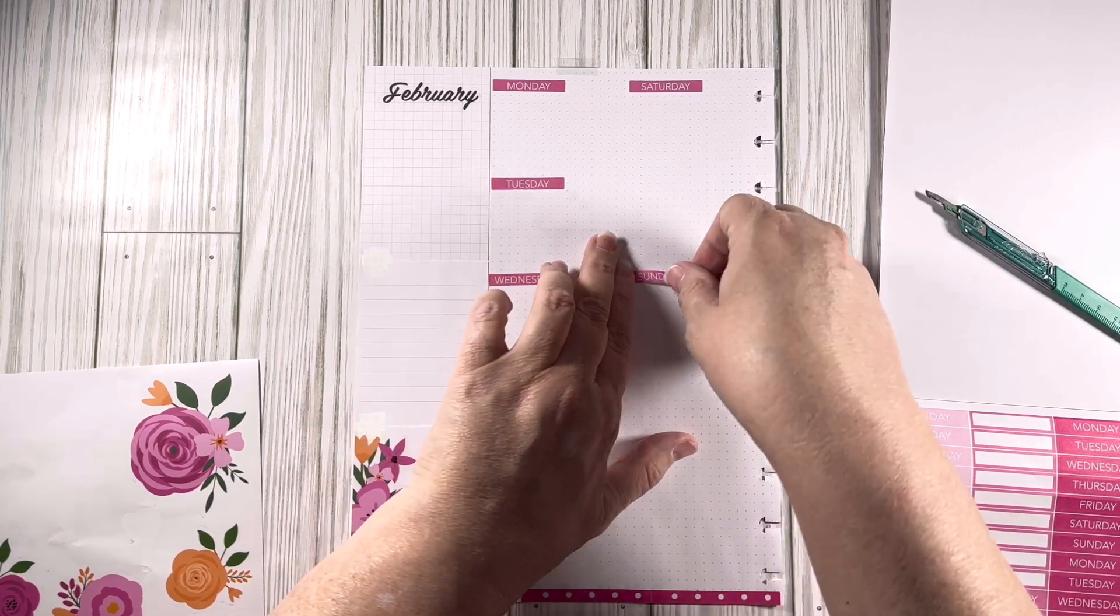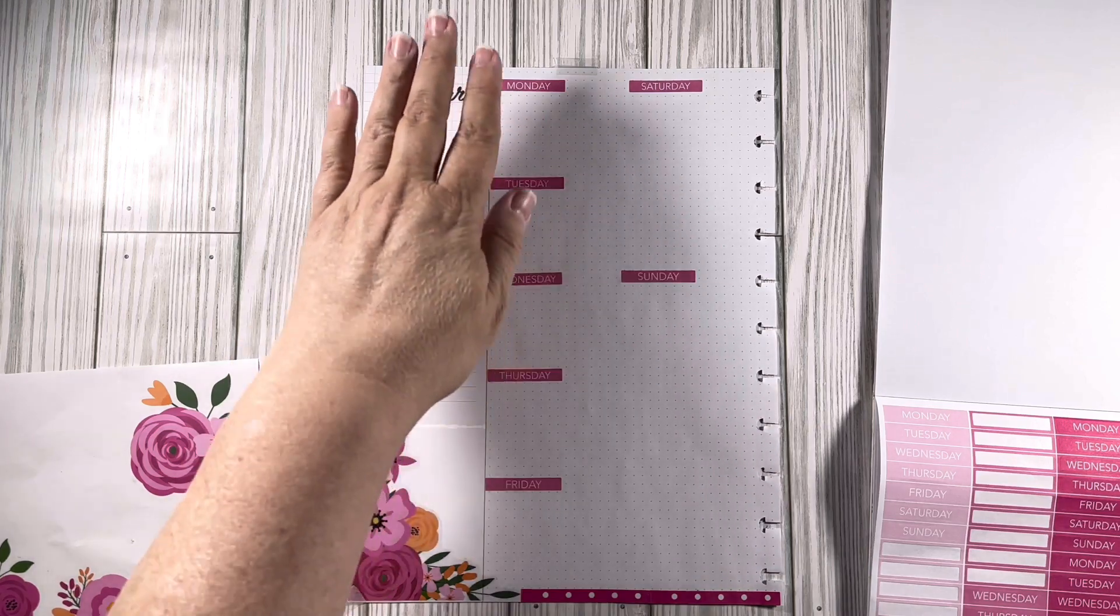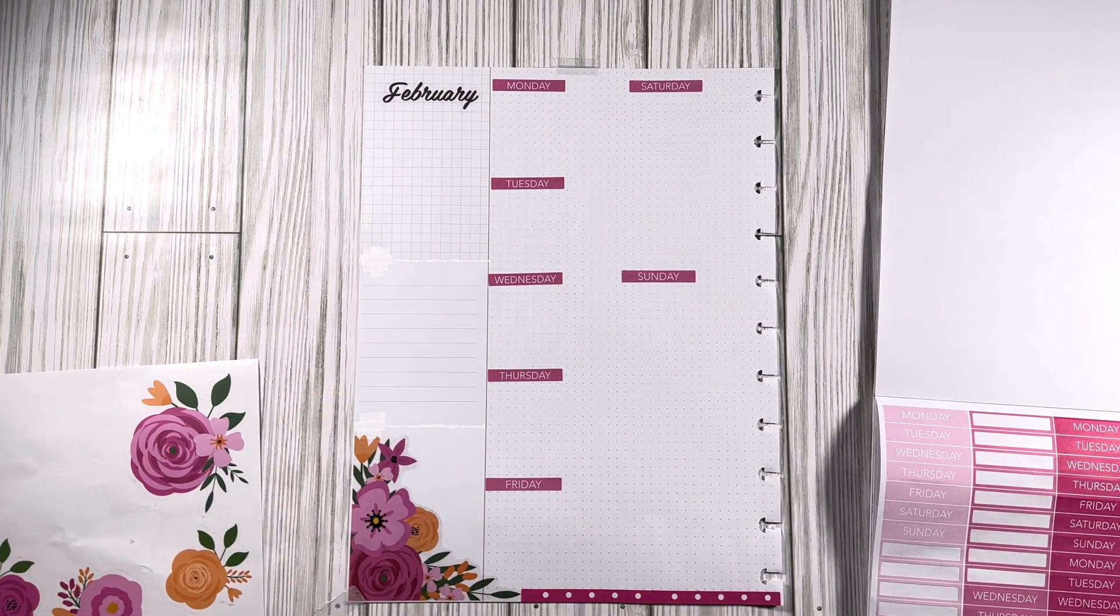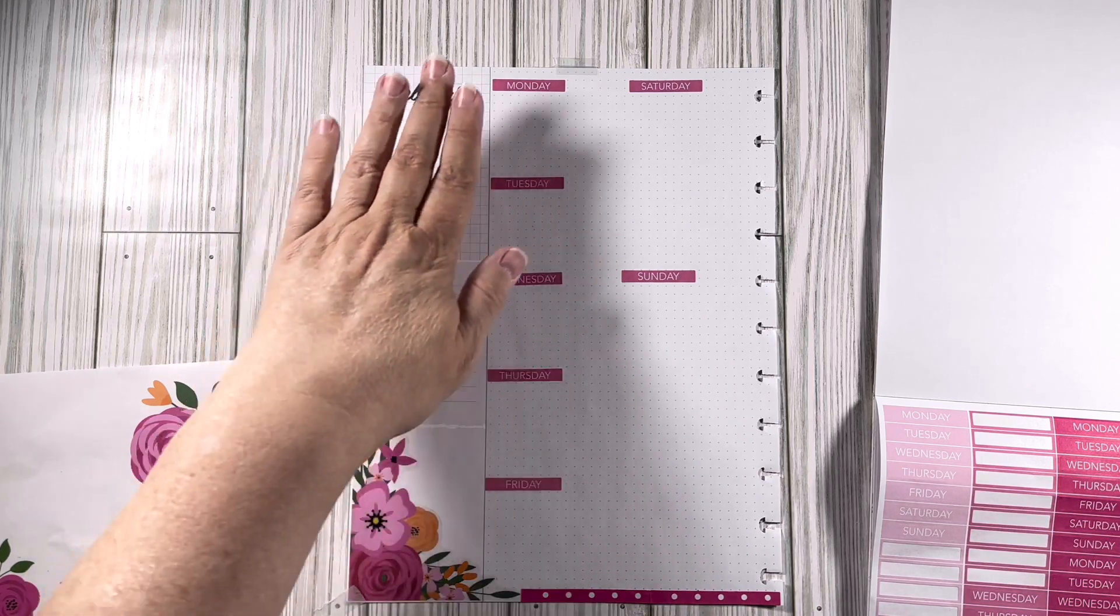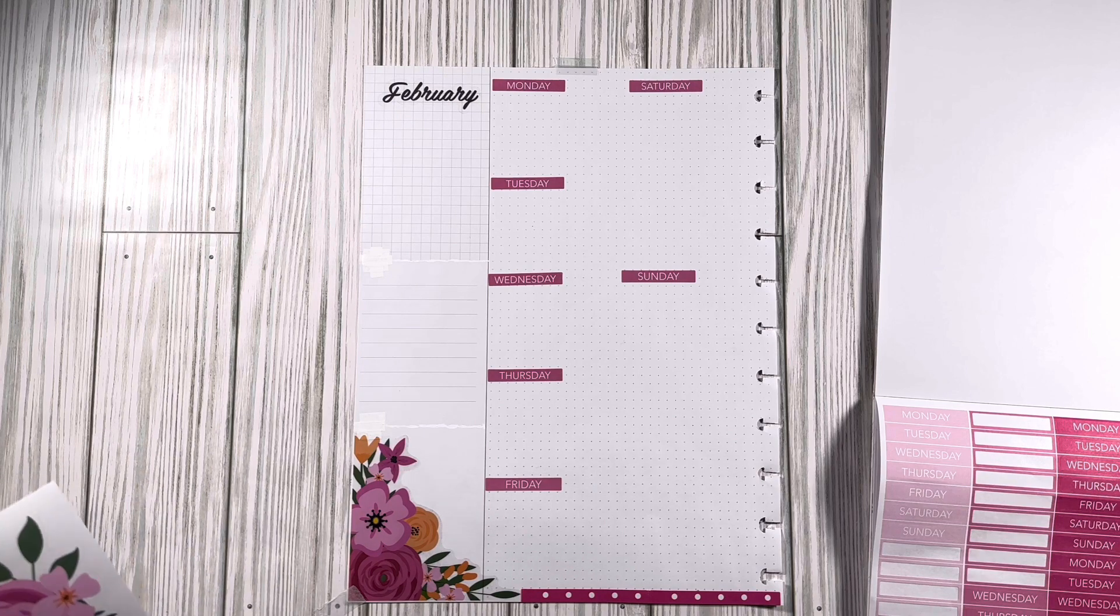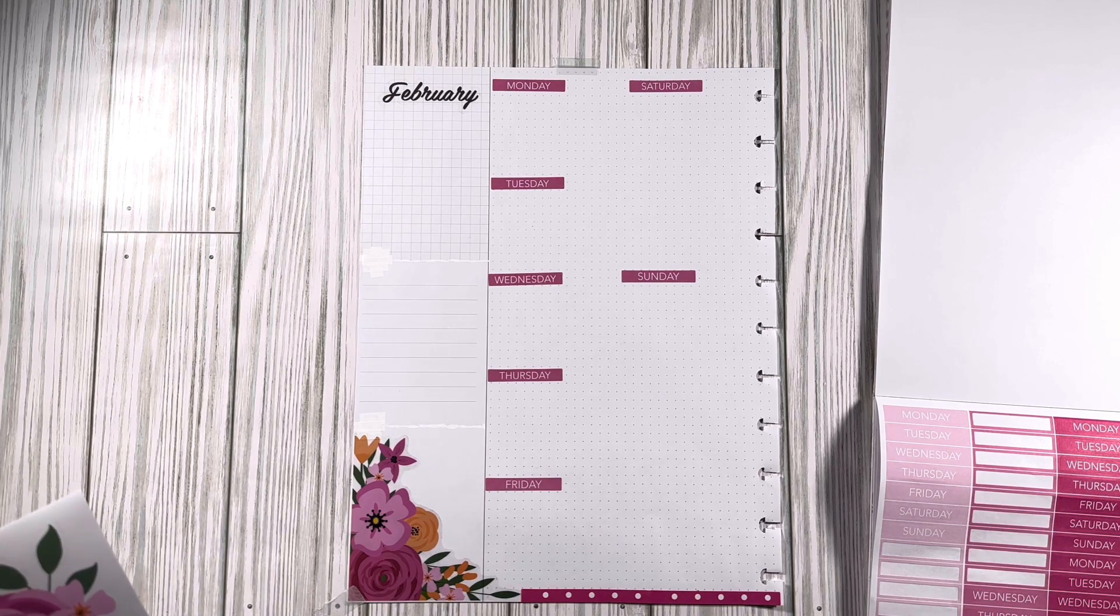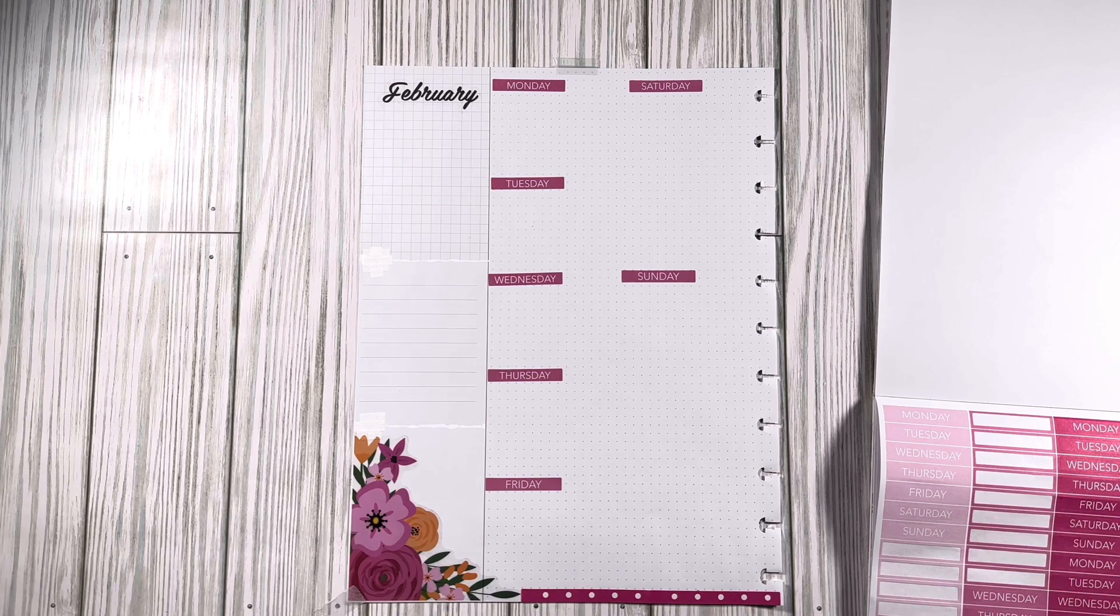I think that needed to go over this way just a smidge. I'll put it right about there, that's about as close as it's going to get. I put my Monday through Sunday on here because then I can just write this will be for the whole month and that'll be my things that I do each day. I think I'm going to take this real bright pink flower.